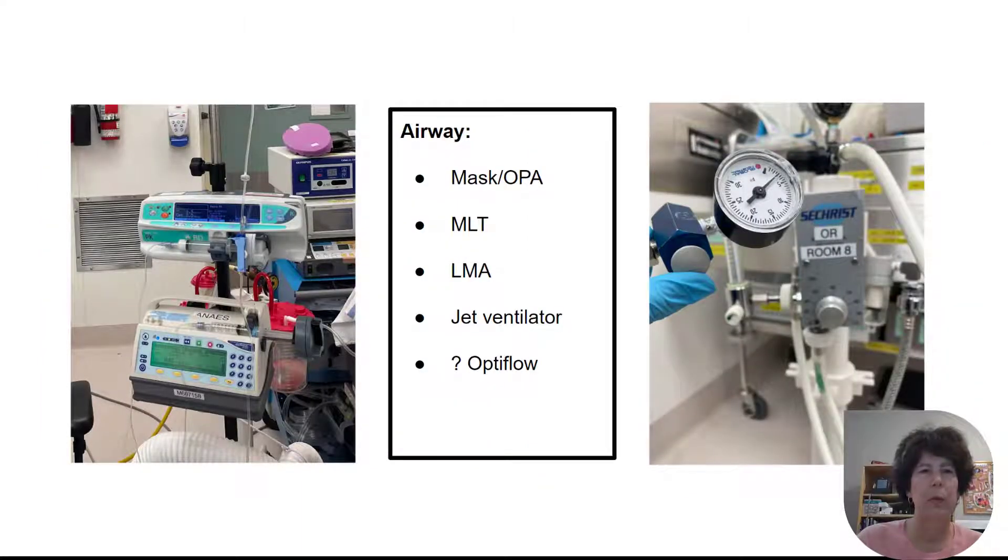What are you going to set up? You are going to do some kind of total intravenous technique because you can't ventilate with gas when we're jet ventilating. On your machine or on your airway setup you will want to have a mask and an OPA ready. The mask for pre-oxygenation at the start of the case and then the OPA potentially towards the end. You will want to have a microlaryngeal tube available in case there's issues with the jet ventilation. We're going to have a laryngeal mask ready for the end of the case. We're going to have our jet ventilator set up and checked and we're going to consider whether we want Optiflow.